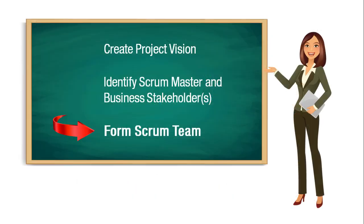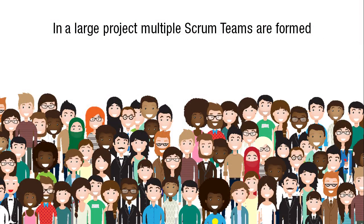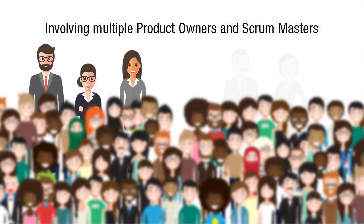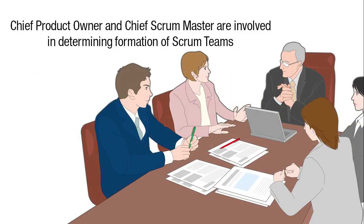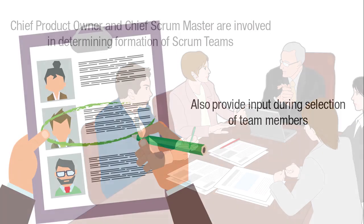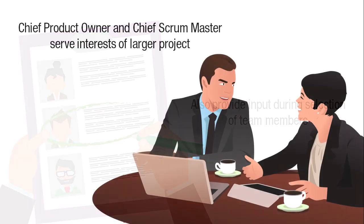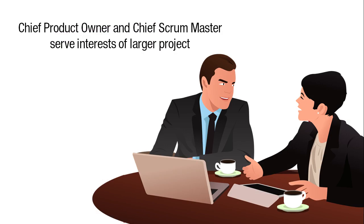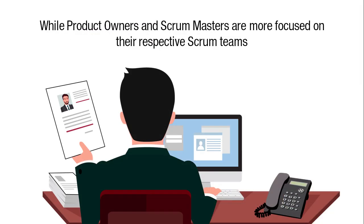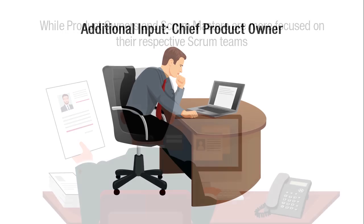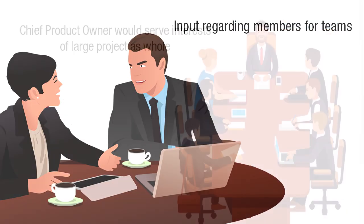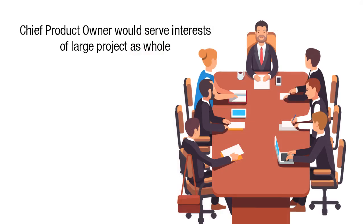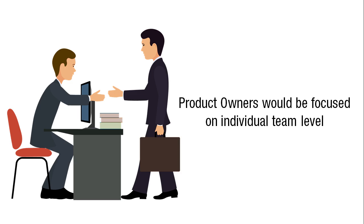The next process in this segment is Form Scrum Team. In a large project, multiple Scrum teams are formed, involving multiple product owners and Scrum masters, as well as a chief product owner and chief Scrum master. The chief product owner and chief Scrum master are involved in determining the formation of the Scrum teams and also provide input during the selection of team members. The chief product owner and chief Scrum master serve the interests of the larger project, while the product owners and Scrum masters are more focused on their respective Scrum teams.